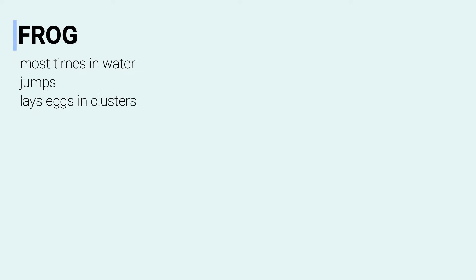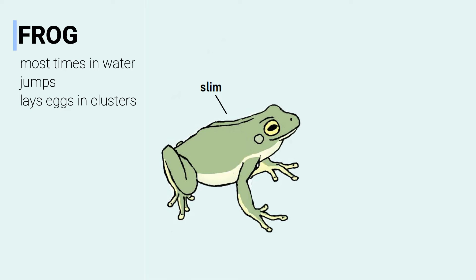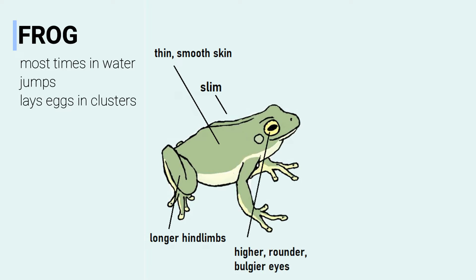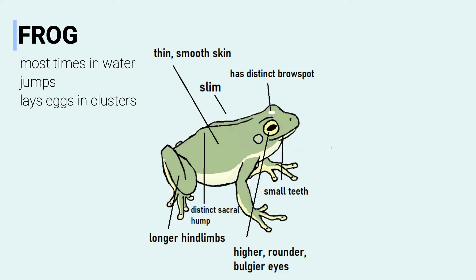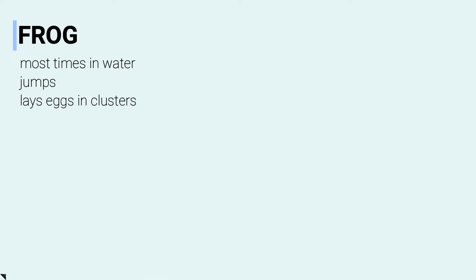Frogs live mostly in water. They prefer to jump. Female frogs lay eggs in clusters. They have a slim body type, their skin is thin and smooth, and they have longer hind legs. They have higher, rounder, bulgier eyes, small teeth, a distinct brow spot, and a prominent sacral hump.